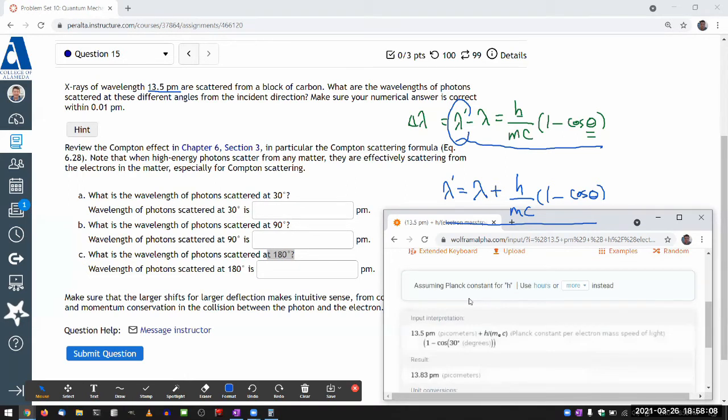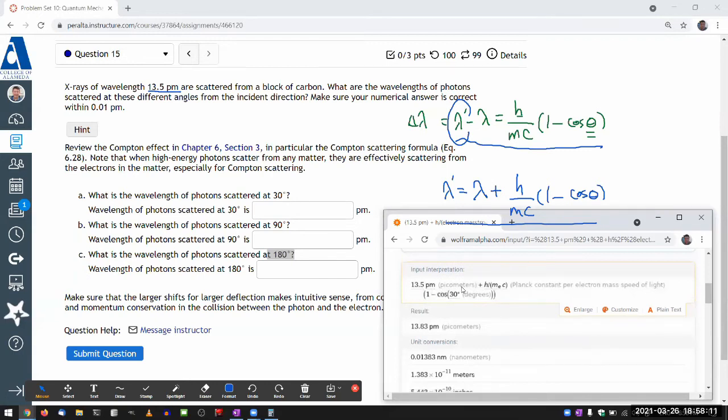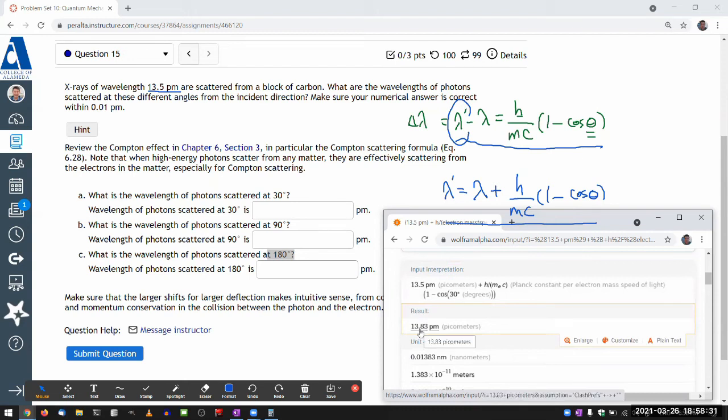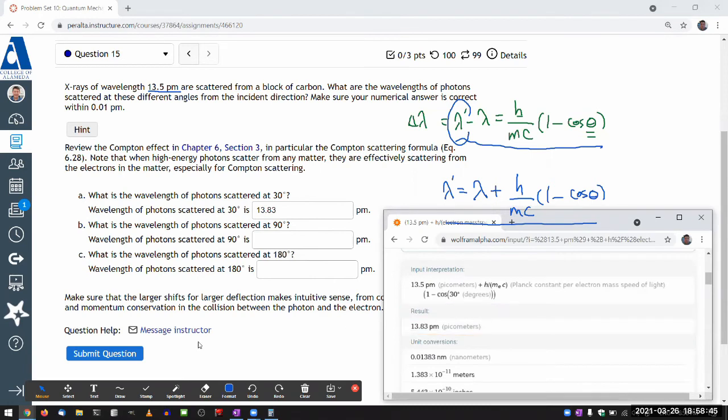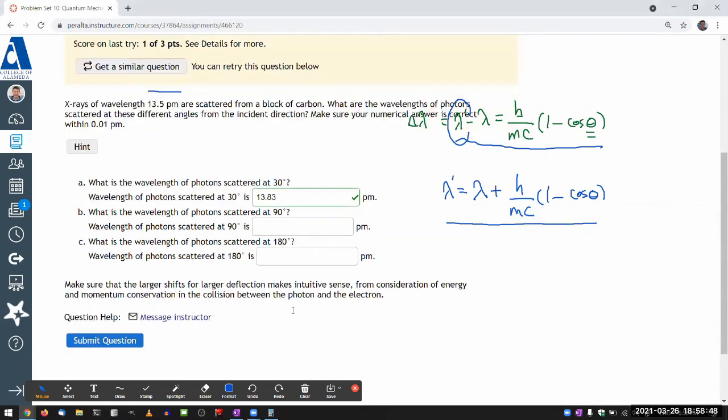So let's see. Yeah, 13.5 picometers plus H over MEC. Oh, I see why it's saying numerical answer correct within 0.01 picometer. Because if we are just doing within one percentile, then I guess 13.5 isn't quite right. But this is a very small difference, only 0.33 difference. So if we want good precision on the difference, then you want to enter down to the hundredth digit. So 13.83 is the wavelength of the scattered photon. Let me just submit to be sure. Yeah, keep going.